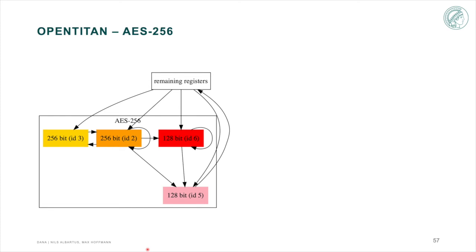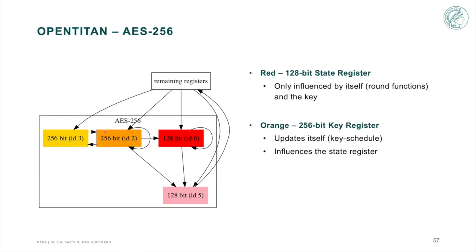The key register, marked in orange, gets updated every round, marked by the looping arrow and influences the state register. In turn, the state register is also updated every round, but never influences the key register, hence there is no arrow pointing to the key register. In addition, we can identify an output register, marked in pink, which is the only register with a connection that leaves the module.